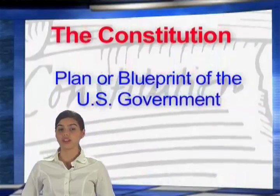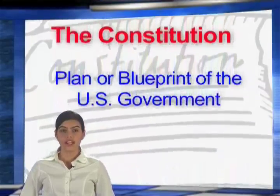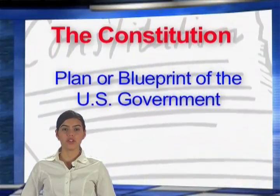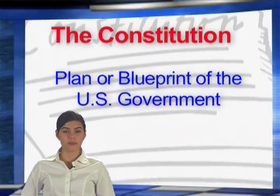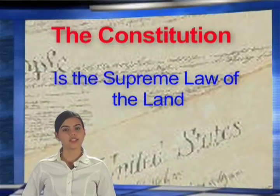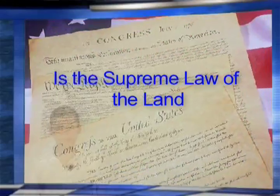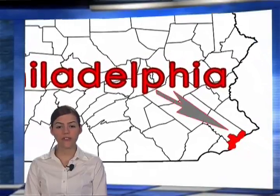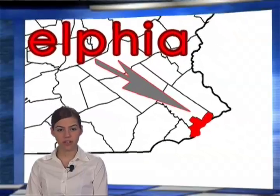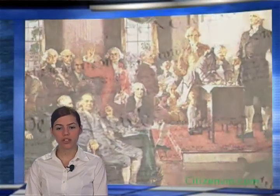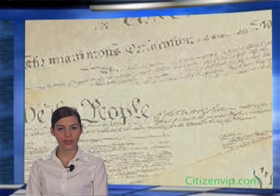All people and all laws must follow the U.S. Constitution. The U.S. Constitution is the plan or blueprint of the United States government. The Constitution is the supreme law of the land. The Constitutional Convention was held in Philadelphia, where fifty-five delegates decided to create a new governing document with a stronger national government — the Constitution.